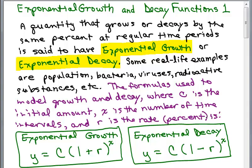So if you're talking about population, C is the initial population. X is the number of time intervals. So let's say it's growing at a certain rate per year and you're talking about 20 years, X might be 20. And R is the rate. So R is usually given as a percent. So let's say 2 percent per year. Then R would be written as a decimal based on that percent.